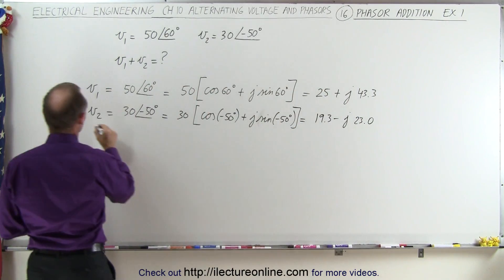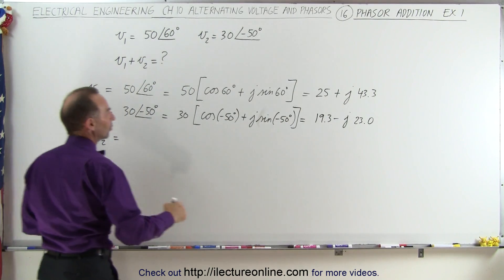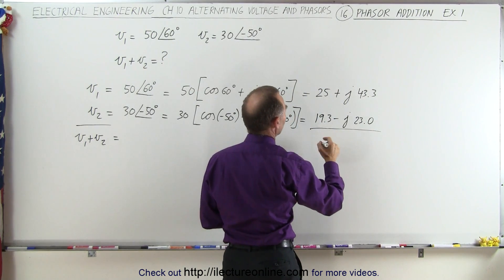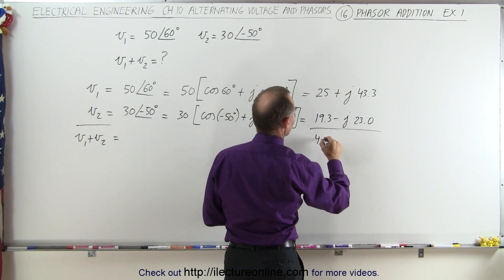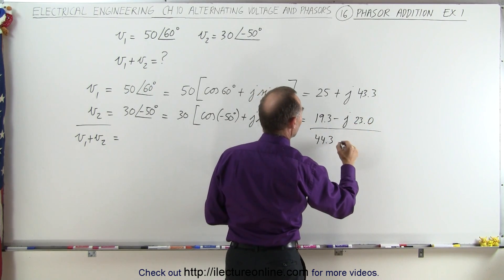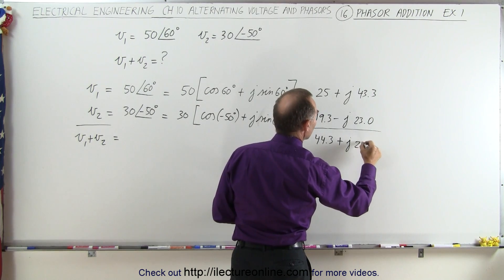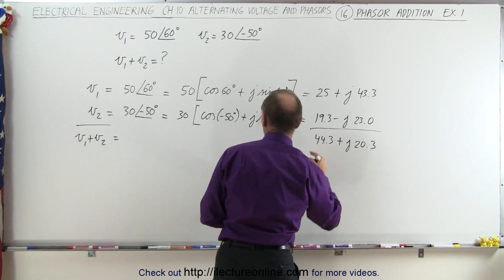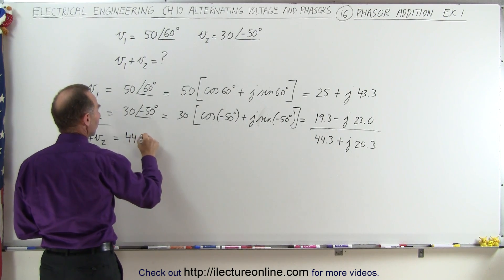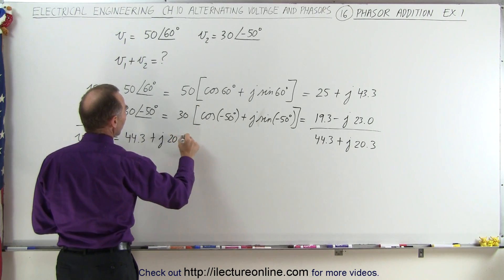So now we can add them together. V1 plus V2 is equal to, we simply add the real parts together, that gives us 44.3, and the imaginary parts, that would be plus j times 20.3. So the sum would be the real part of 44.3 plus j times 20.3.